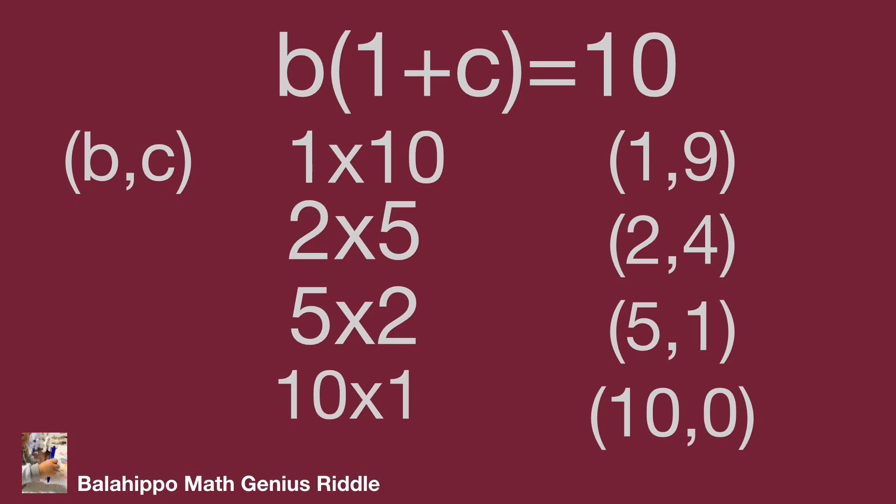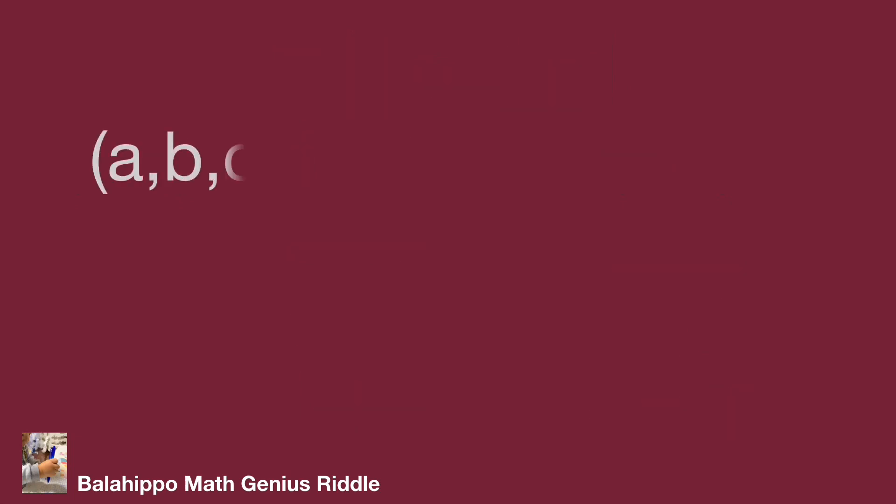So it's not the right number group. Finally, the number groups for a, b, c are 1, 1, 9; 1, 2, 4; and 1, 5, 1. That's the answer we find. Do you got it?